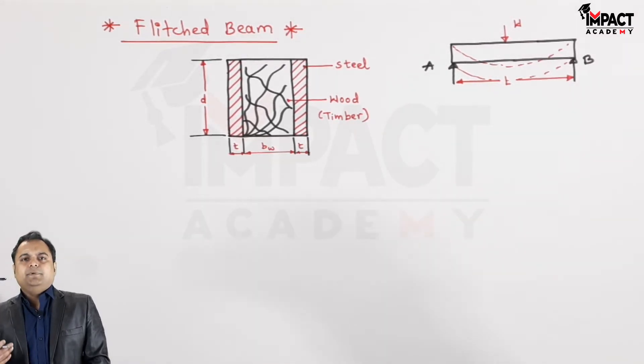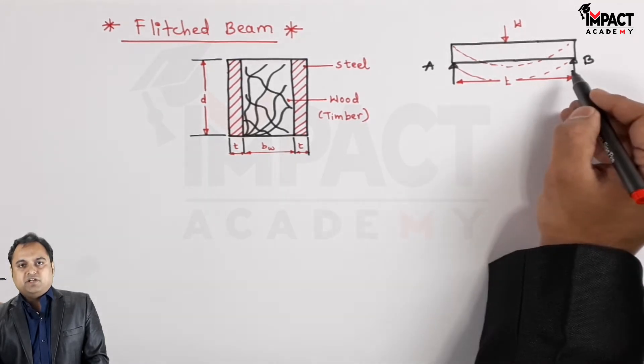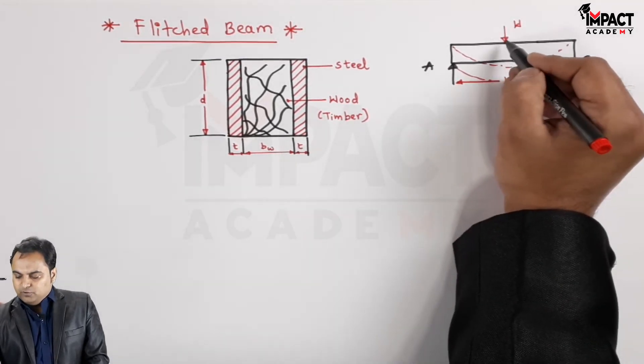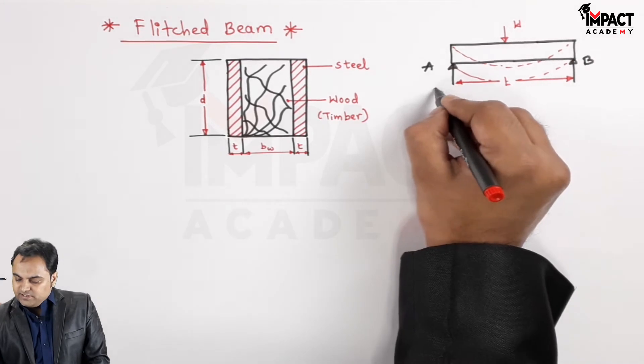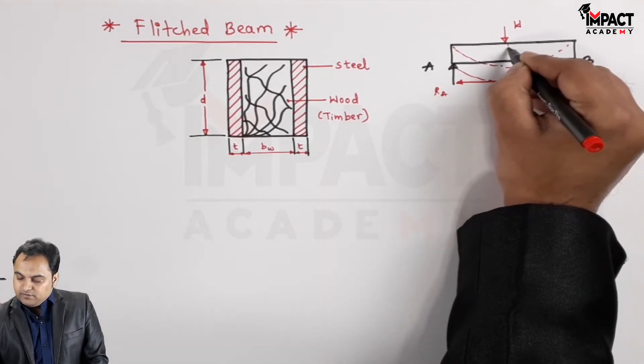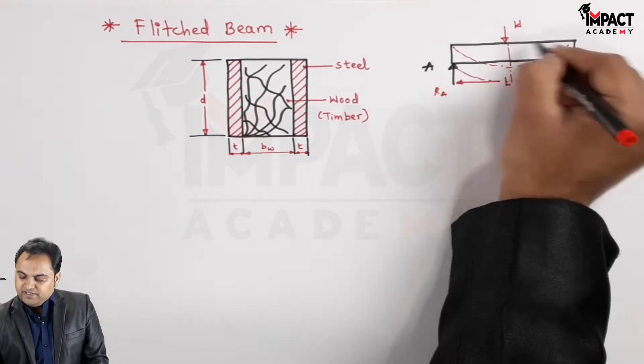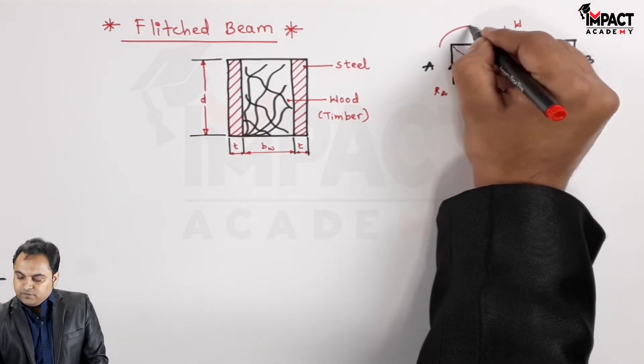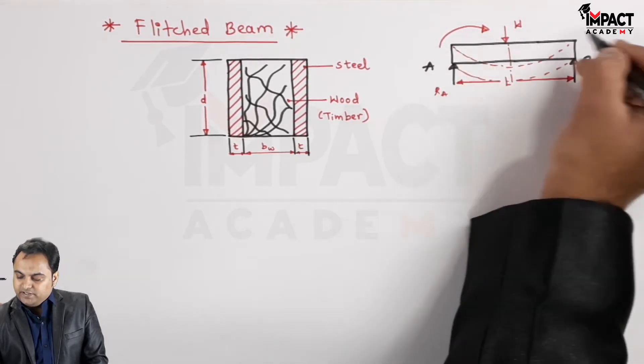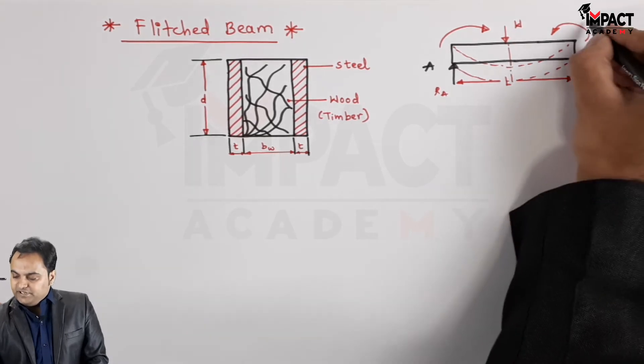So that is why we are using composite material. Because the beam is bending because of some external loading, like here there is w, and when I take the reaction at A, reaction at B, and considering the center of this beam. Because of RA, I can take either RA or RB. This beam is going to bend in this fashion, which is called the sagging bending moment.